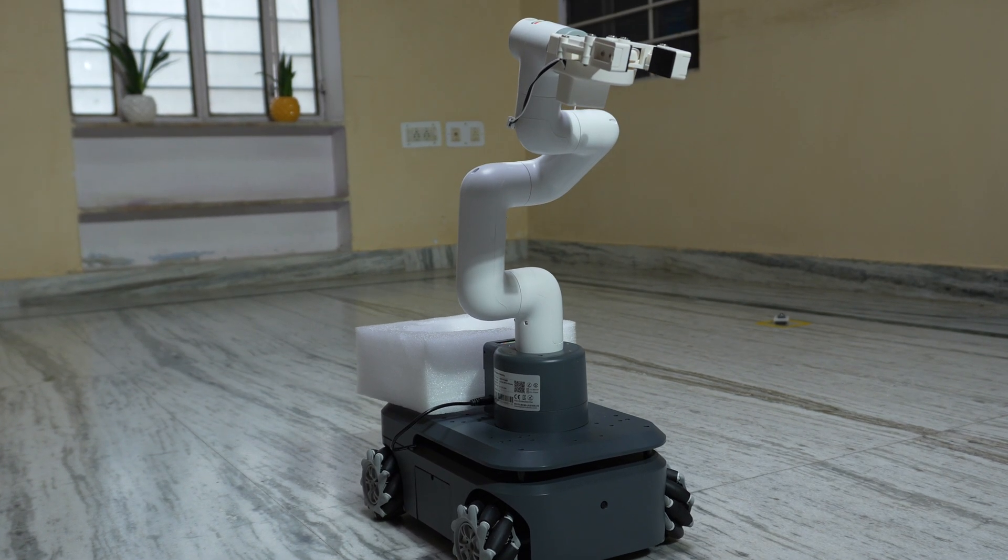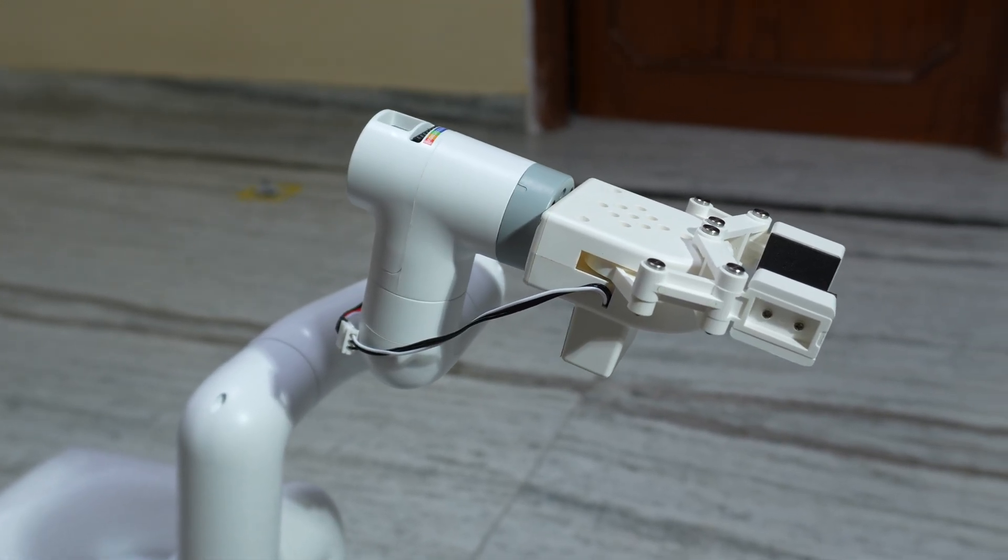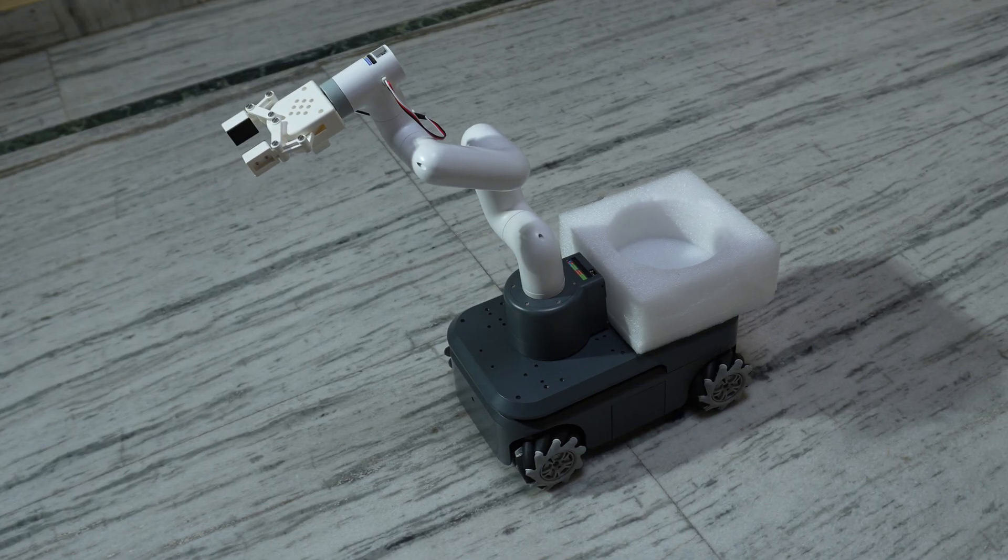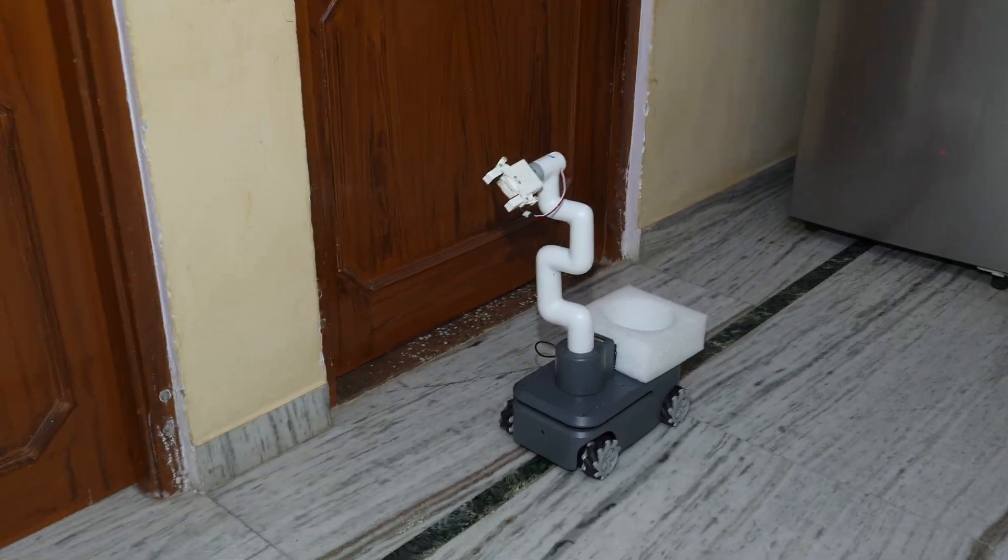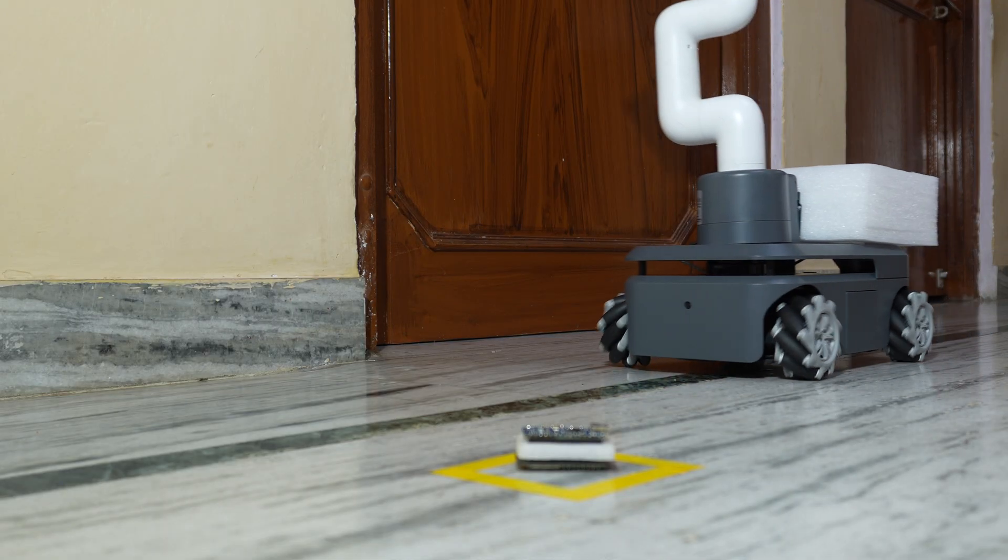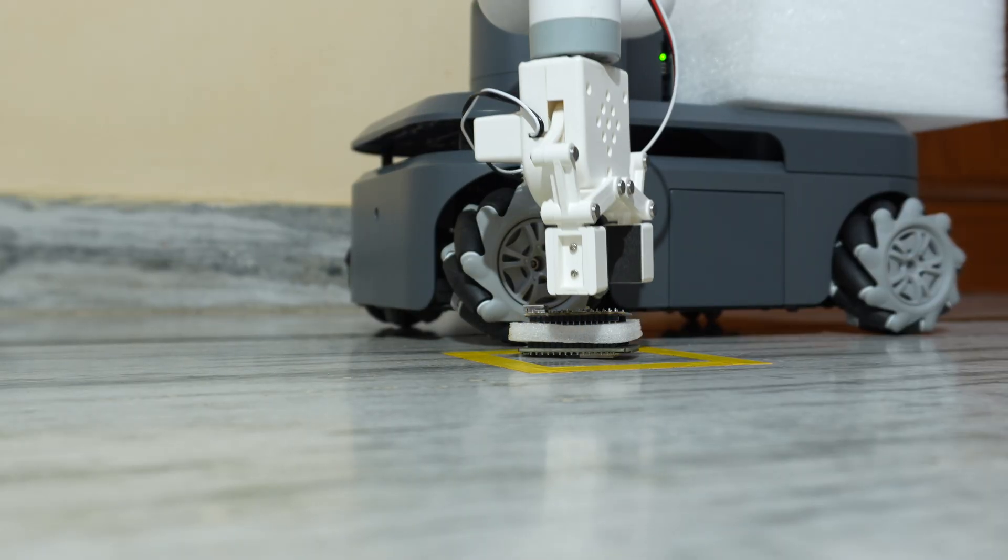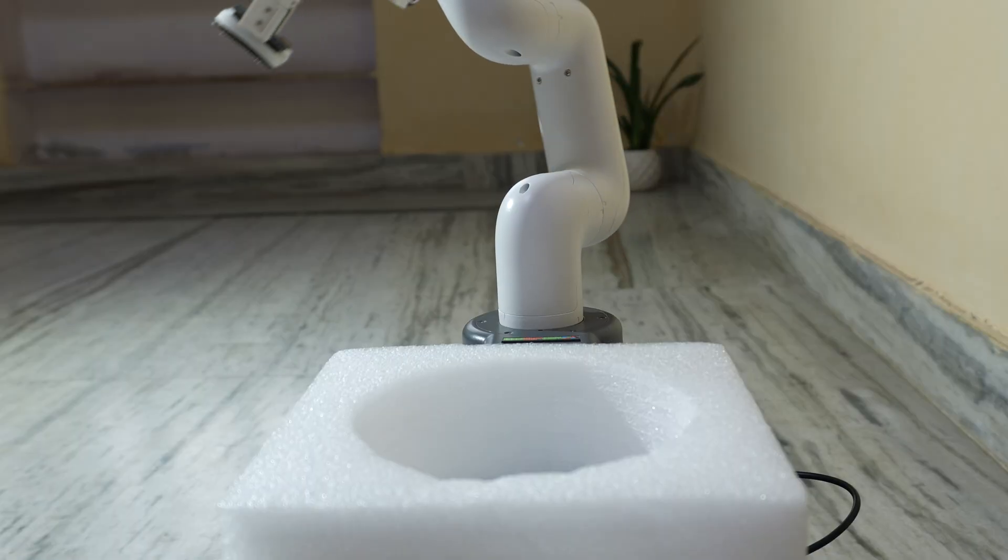Now comes the exciting part: performing a pick and place operation. In our factory floor simulation, we have placed three objects in a row at some distance. The AGV will navigate along the path, stop at each position, and the MyCobot pick up the object and place it onto the platform.